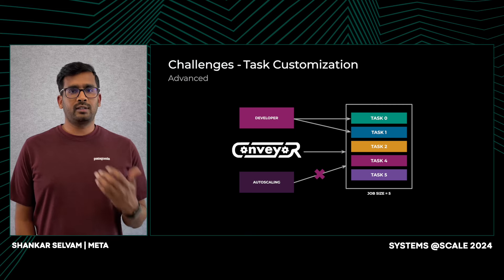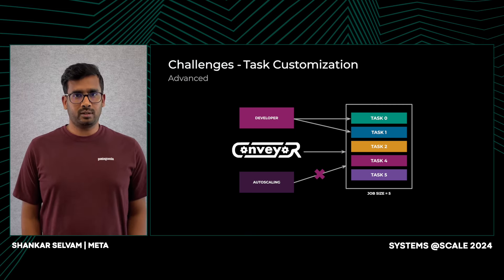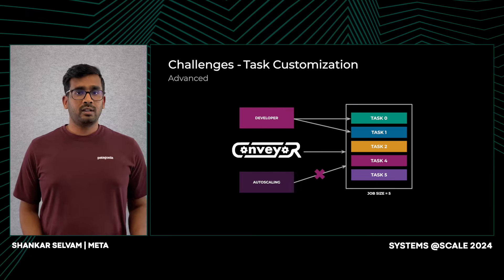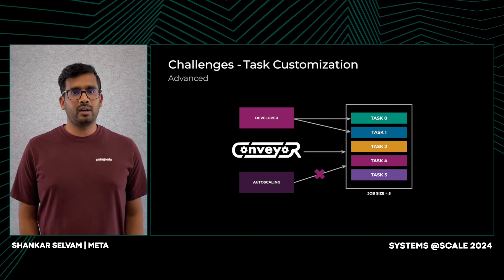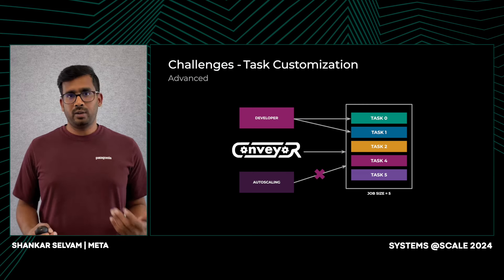So far we have seen Instagram server, which is largely a stateless service, and how it uses task customization. Stateful services are another use case. Stateful services could configure each task to be completely unique — they could configure them to run a distinct set of shards, or in more extreme examples, could be configured to run completely different binaries on each task. This is problematic because we cannot safely enable features such as autoscaling on these jobs. When each task is special, Twine wouldn't know how to add new tasks.